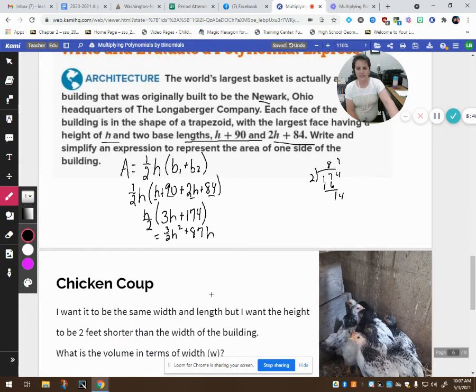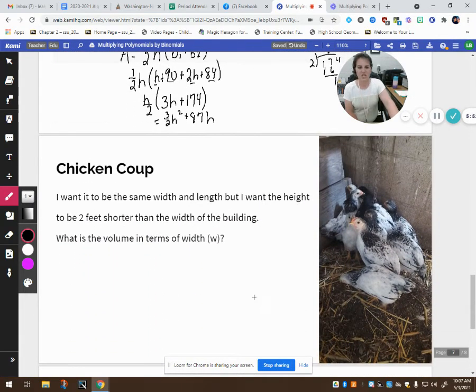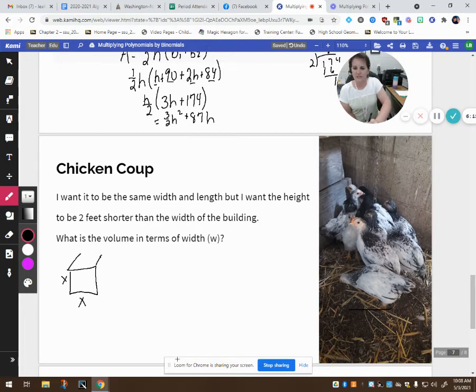All right, so next thing that we want to look at is a chicken coop. I think I told you guys I hatched a bunch of baby chicks, and now I need a chicken coop. I want a chicken run outside. I have the barn where the chickens stay, but I want to build a coop. So I want the base of my building to be a square. So if it's a square, we know the length and the width is the same. But when I do the height of my chicken coop, let's see if I can draw a picture here.